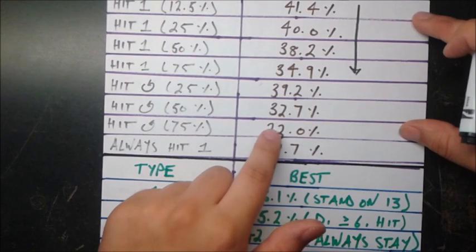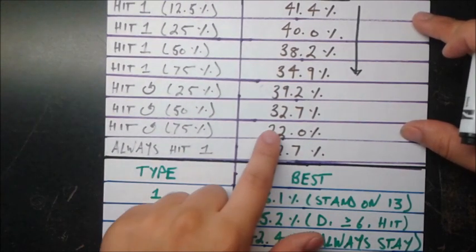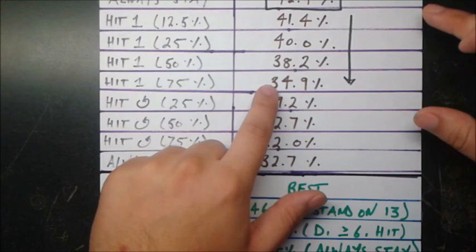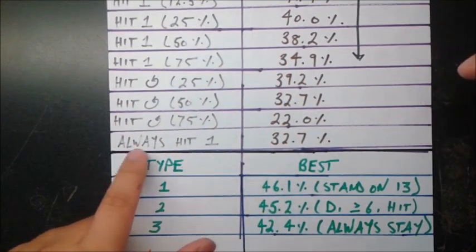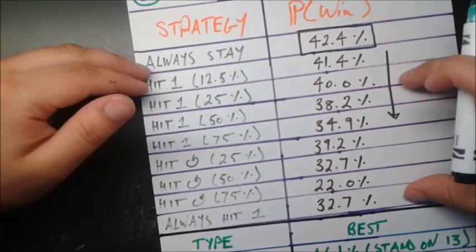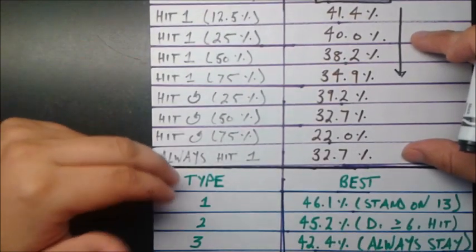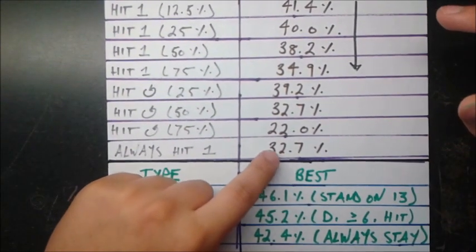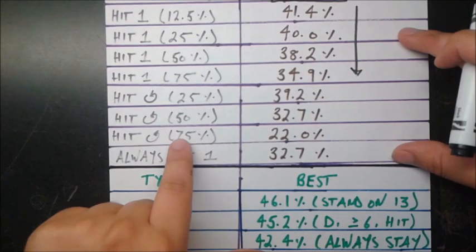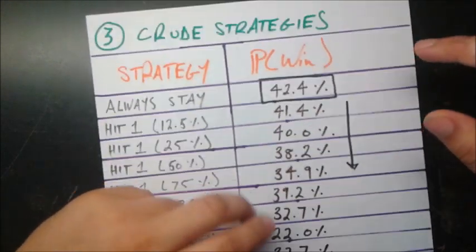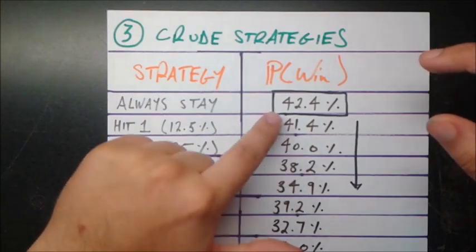Whereas the 75% here was like 35% here. And we see that always hit one. So this is the opposite of always stay. You're always going to hit one regardless of what your cards are. Gives you 32.7%, which is still better than this continuous hitting of 75%. But we see that the best you can do here is always staying.